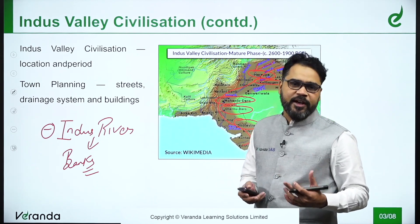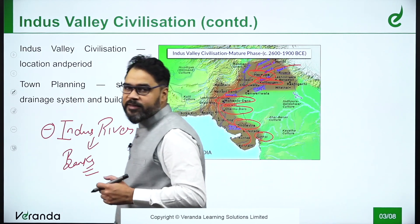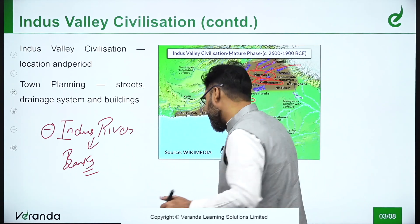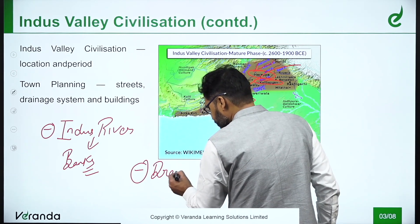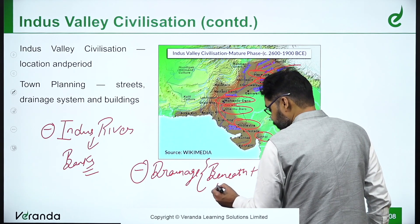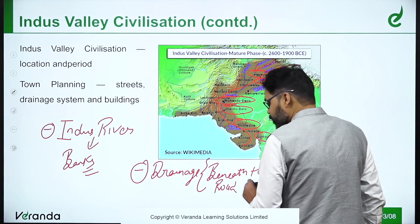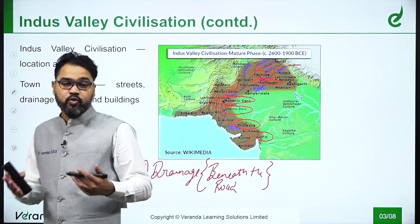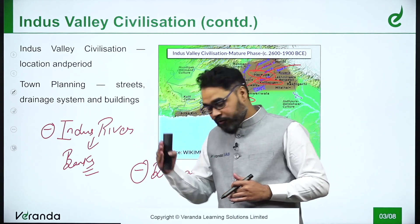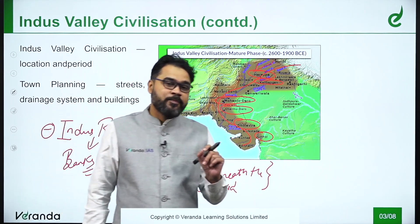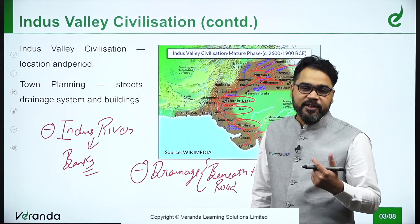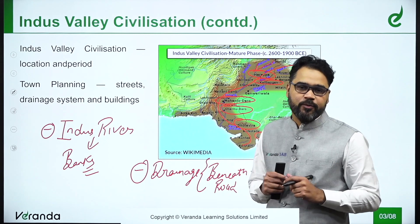Speaking about town planning, it was so brilliant — the sewage system and drainage system were remarkable. They had drains beneath the roads, and there was a big outlet outside the city where contaminated water was discharged. Even at that point of time, people had a basic sense of sanitation; sanitation was definitely a priority among the people of the Indus Valley civilization.